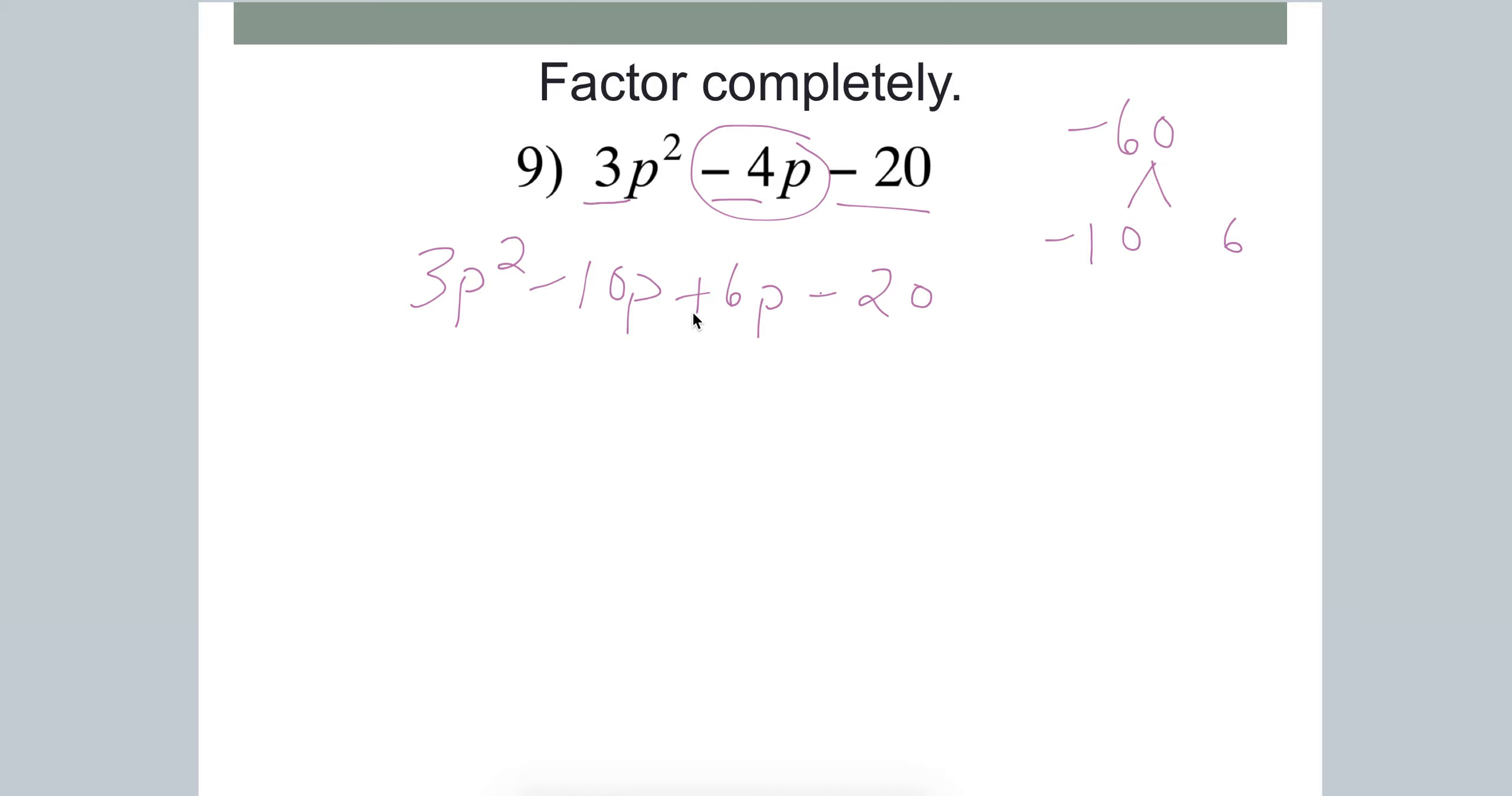Okay, and then this is a good thing because we know how to factor by grouping. So let's look at the first two terms and see what we can pull out. Well, you can pull out a p. And then you'd get back 3p minus 10. And now let's see what we can pull out here. It looks like you can pull out a 2. If I pull out a 2 to get back 6p, I need 3p. And to get back negative 20, I need minus 10.